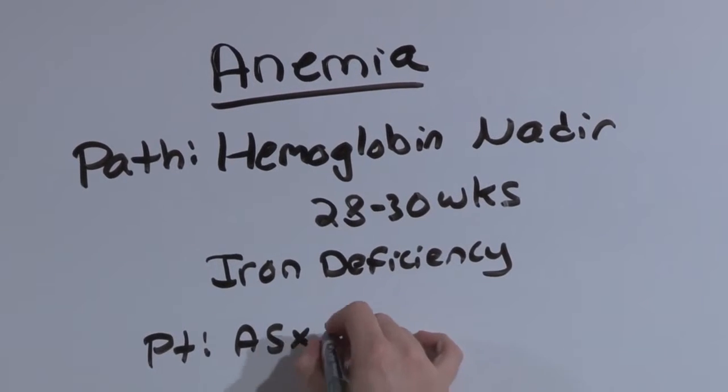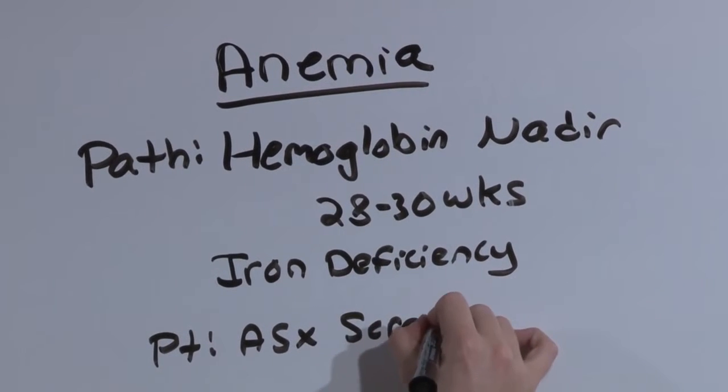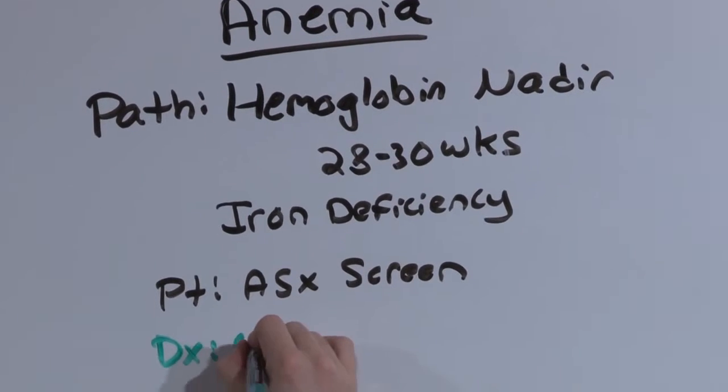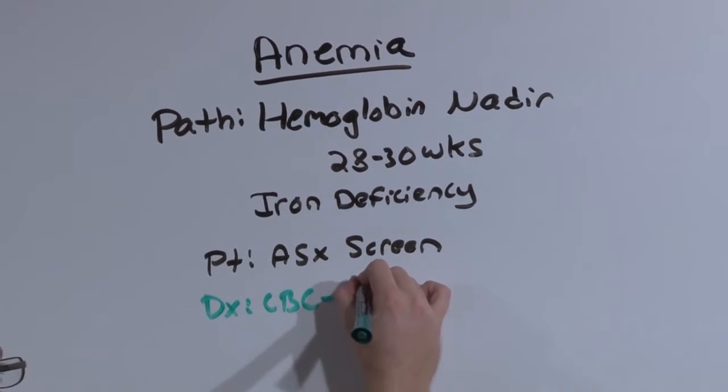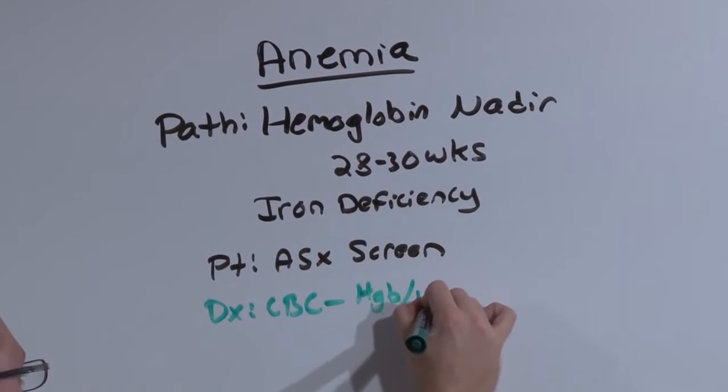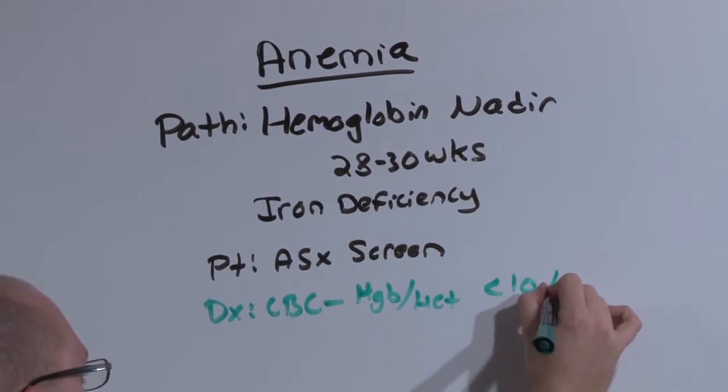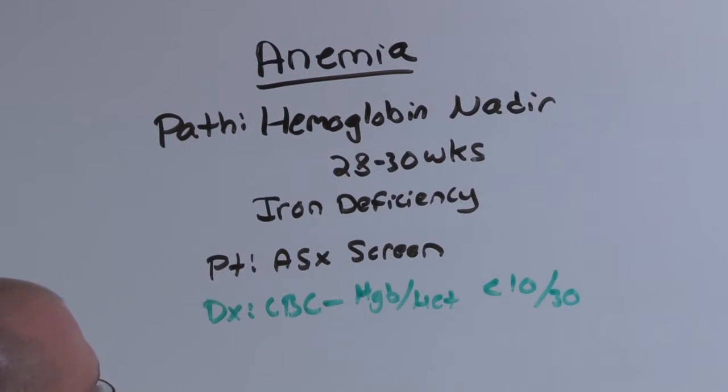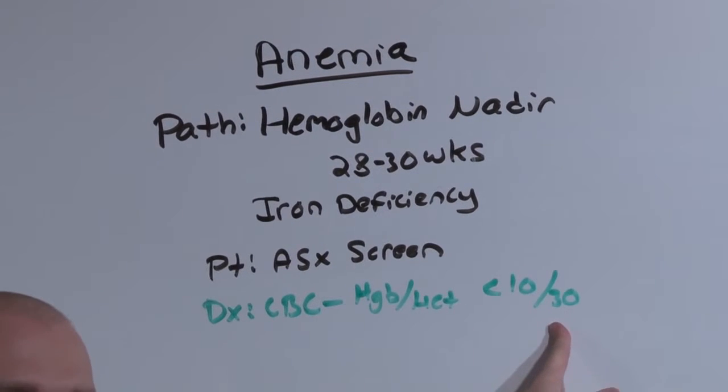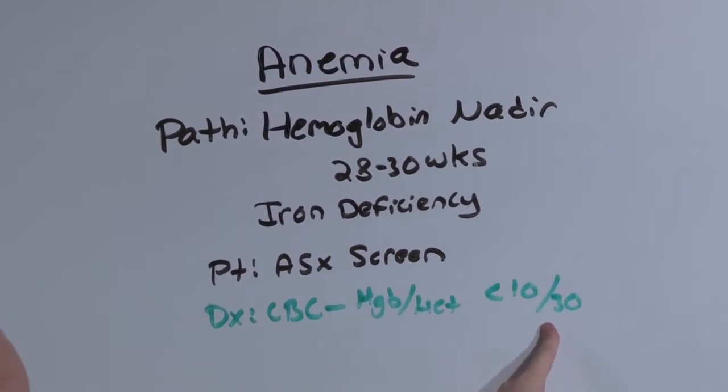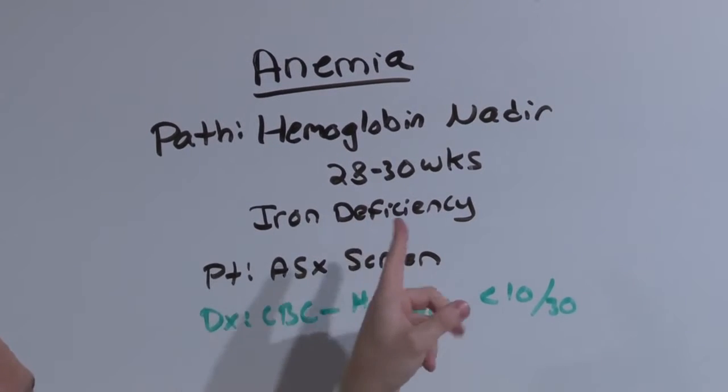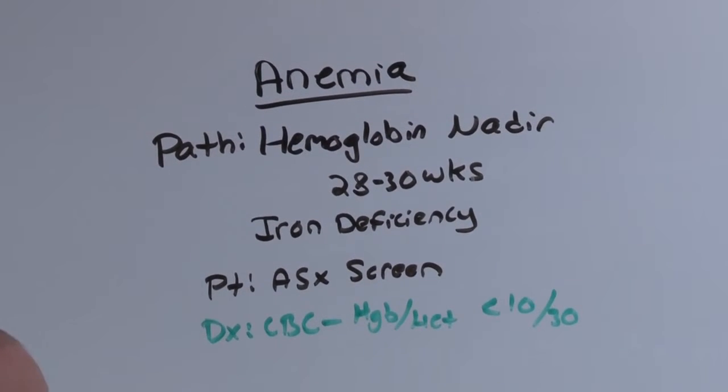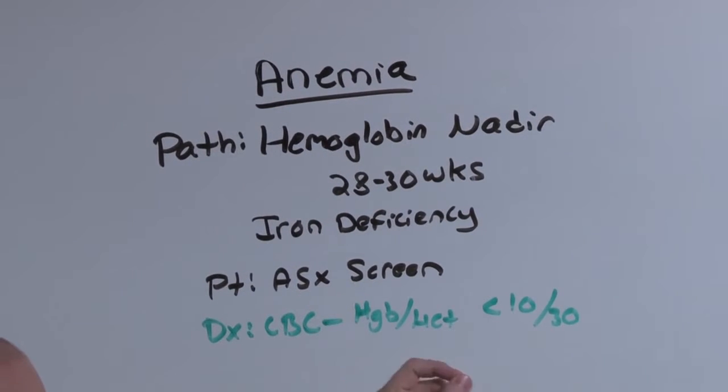The patient is going to be asymptomatic, and we're going to screen her in the third trimester. We screen her with a CBC. And it's going to show us a hemoglobin and hematocrit that is less than 10 over 30. If you saw 10 over 30 in a normal patient, this would be anemic. But the hemoglobin nadir is at 28 to 30 weeks because of the gain of fluid volume.